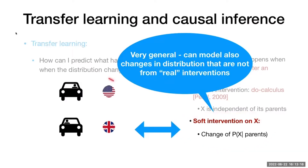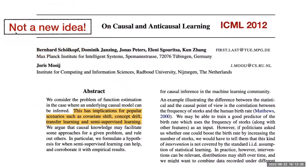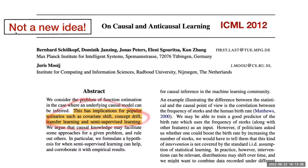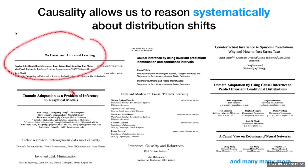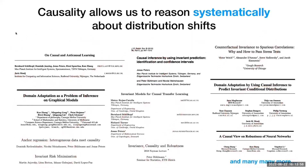Soft interventions and transfer learning have a connection — this is not a new idea. There's a famous 2012 ICML paper on causal and anti-causal learning where several people discussed how things done in transfer learning can be seen as causal or anti-causal problems. Since then, many more papers have followed.